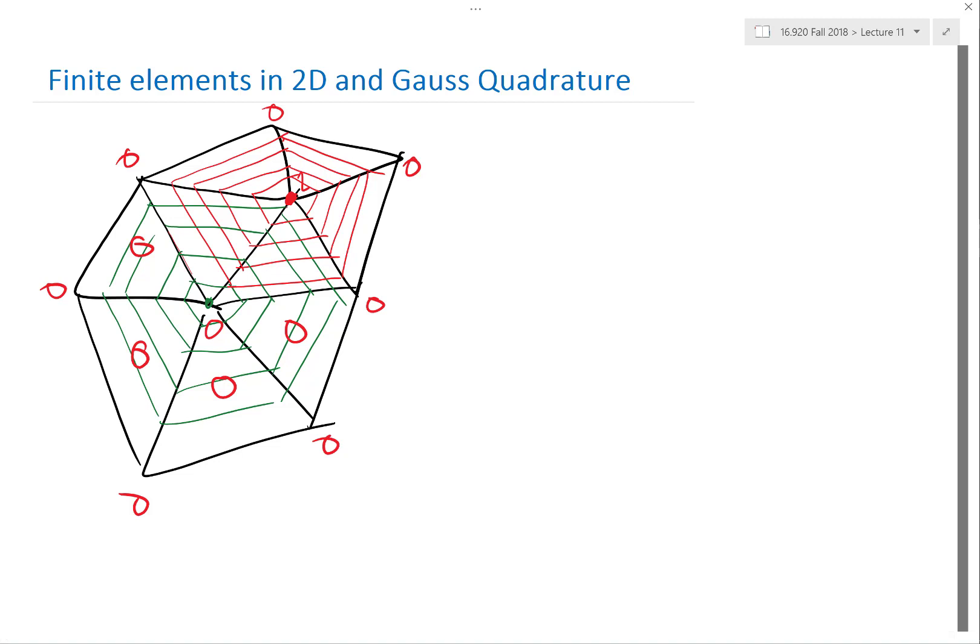So here let's imagine the way we constructed the finite element matrix. Let's focus on one of these elements, for example, focus on this one. How many basis functions, how many non-zero basis functions do we have within that element, or how big is the element matrix?